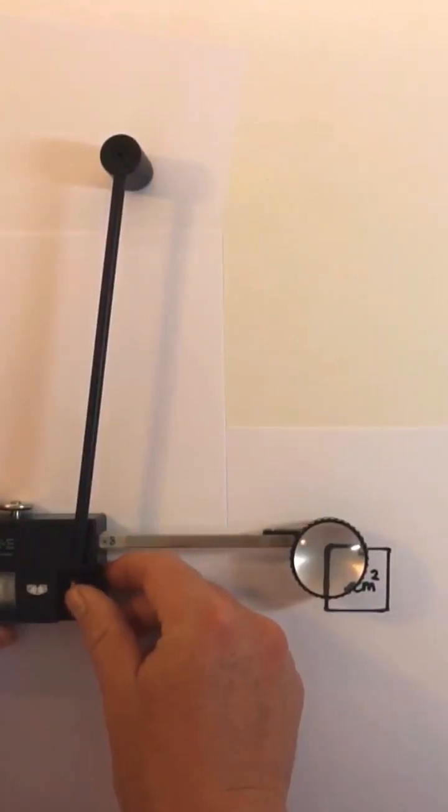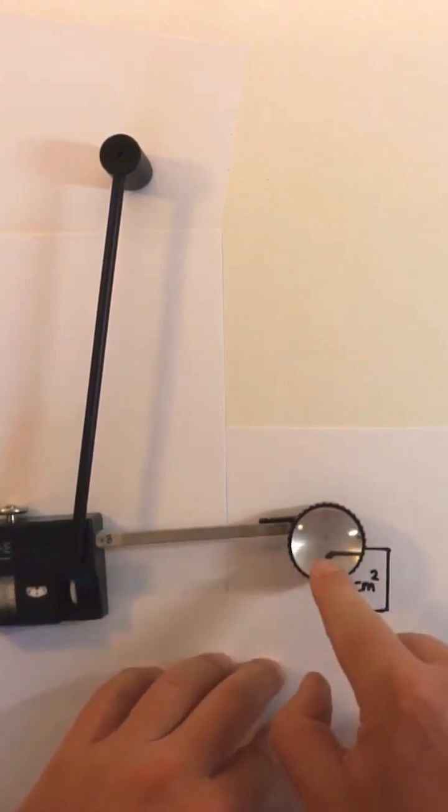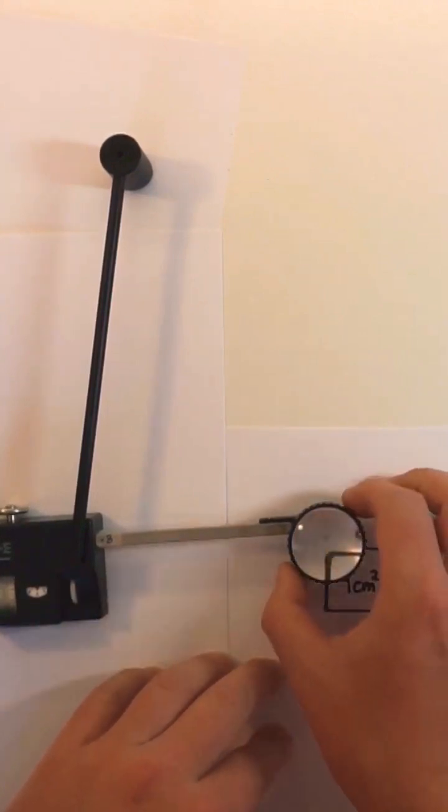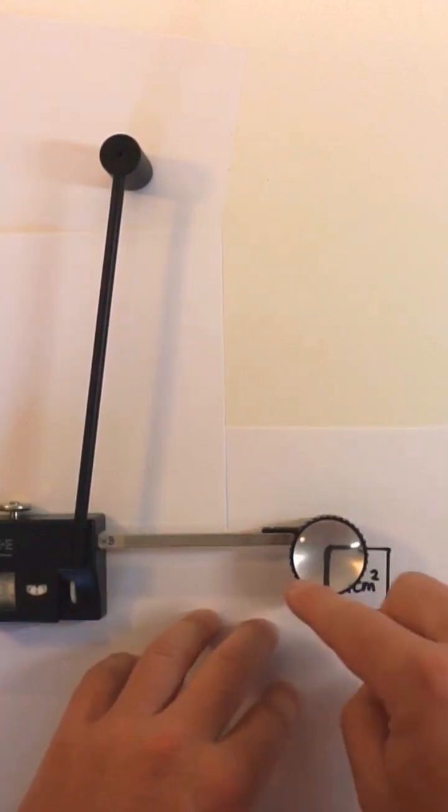I've got the gauge starting at zero and I'm making sure that the little circle inside this magnifying glass is in the top left corner of our square. And now I'm just going to trace around the outside of our shape and we're going to see what area it gives us.